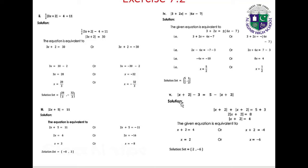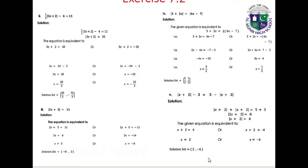Part 5: |x plus 2| minus |x plus 2| minus 3 equals 5 minus |x plus 2|. Rearranging: |x plus 2| plus |x plus 2| equals 5 plus 3, giving 2|x plus 2| equals 8, so |x plus 2| equals 4. This gives x plus 2 equals 4 or x plus 2 equals minus 4, therefore x equals 2 or x equals minus 6. Solution set: {2, -6}.